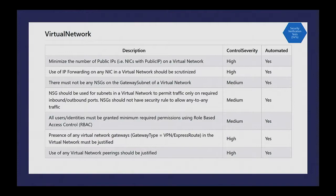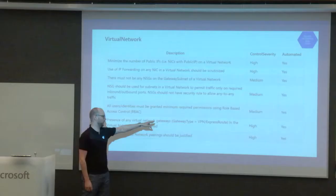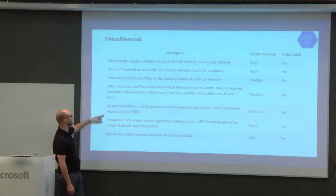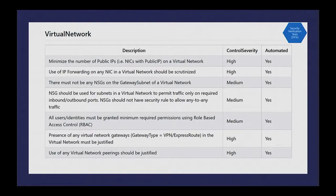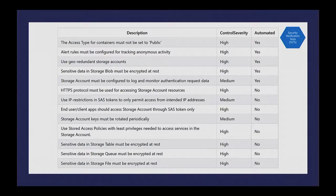For reference, we do quite thorough tests for most IaaS components and close to 20 different PaaS components as well. For the VNet side, there are nice checks — for example, no Network Security Groups on the gateway subnet. For storage, we check whether we're using HTTPS enforcement, IP whitelisting for tokens, and so on — literally the best practices for all covered services.